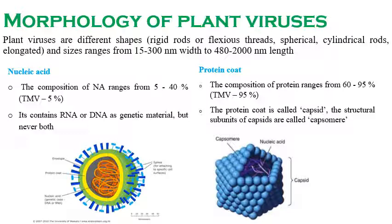Every plant virus contains two major components: nucleic acid and protein coat. The nucleic acid content ranges from 5 to 40 percent in almost all viruses, except TMV which contains only 5 percent nucleic acid. The nucleic acid may be RNA or DNA but not both. It is packed inside the capsid in a thread-like structure and plays a major role in disease spread and transmission.